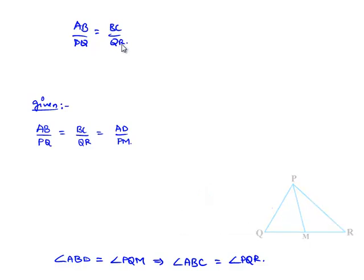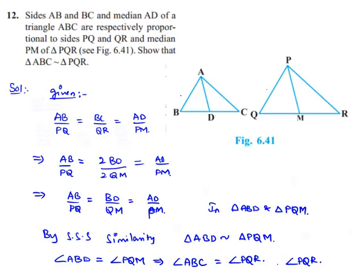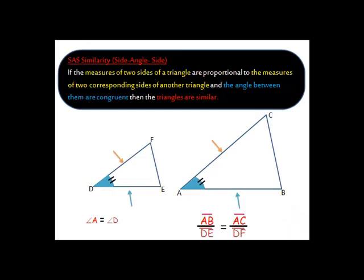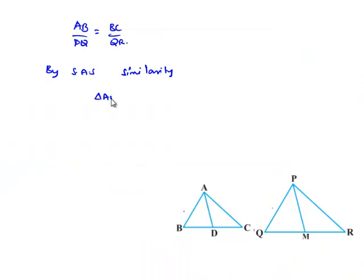So therefore by SAS similarity we can say triangle ABC is similar to triangle PQR, which is the required proof for us.